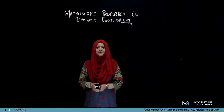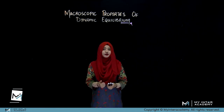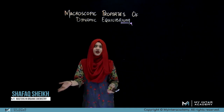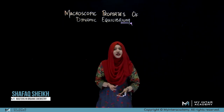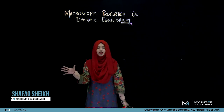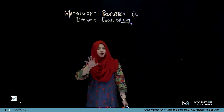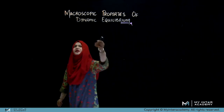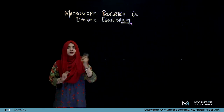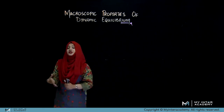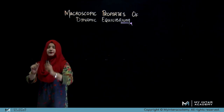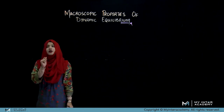Assalamu Alaikum and welcome back students. In the previous video we discussed macroscopic properties of forward and backward reactions and what macroscopic properties dynamic equilibrium has, and why we are discussing it — because chemical equilibrium is a dynamic equilibrium achieved. We will revisit this with the help of a definition.